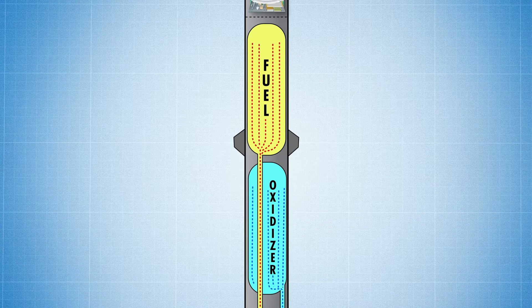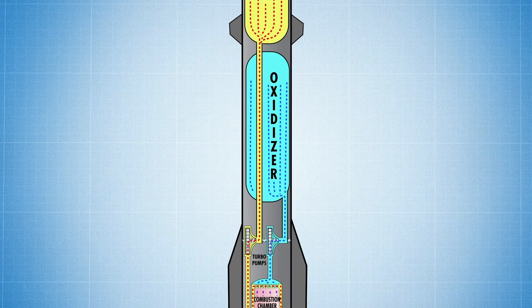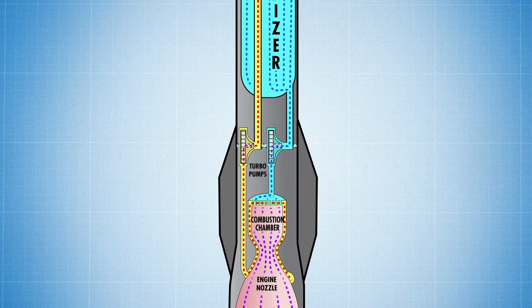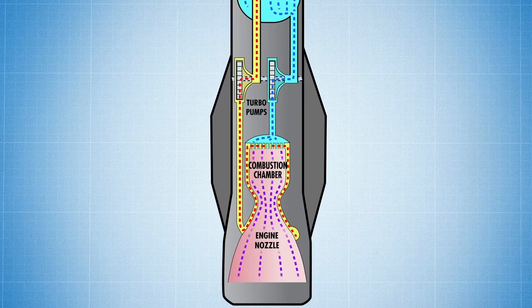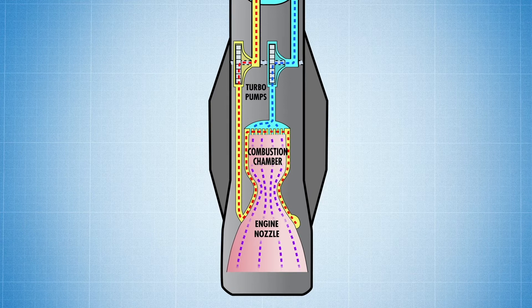Pressurized gas, such as helium, forces fuel and oxidizer from their tanks and into the rocket engine's turbopumps and combustion chamber, where it ignites and is forced through the engine nozzle, giving the engine its thrust.